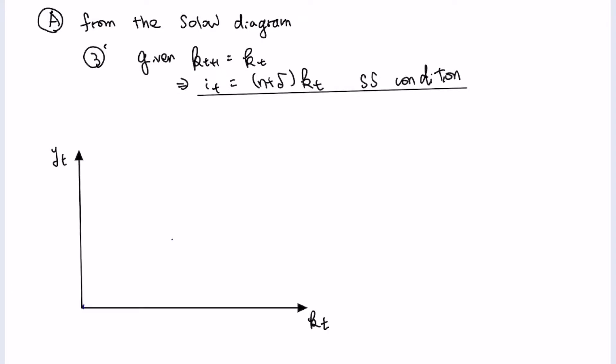The diagram has the vertical axis for yt and the horizontal axis for kt. The reason we choose kt on the x-axis is because the entire system described by the Solow model can be represented by k. The first equation we want to draw on the Solow diagram is the production function. When k is higher, y is higher; however, the increment of y when k increases becomes less and less. That is the property of the Cobb-Douglas production function.